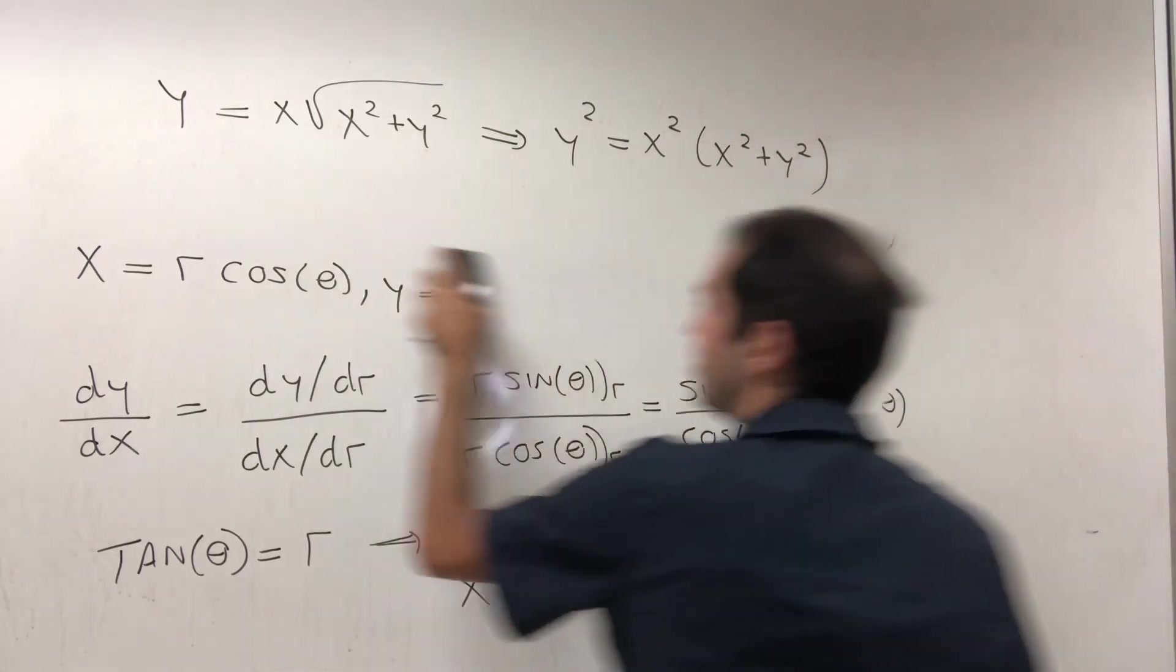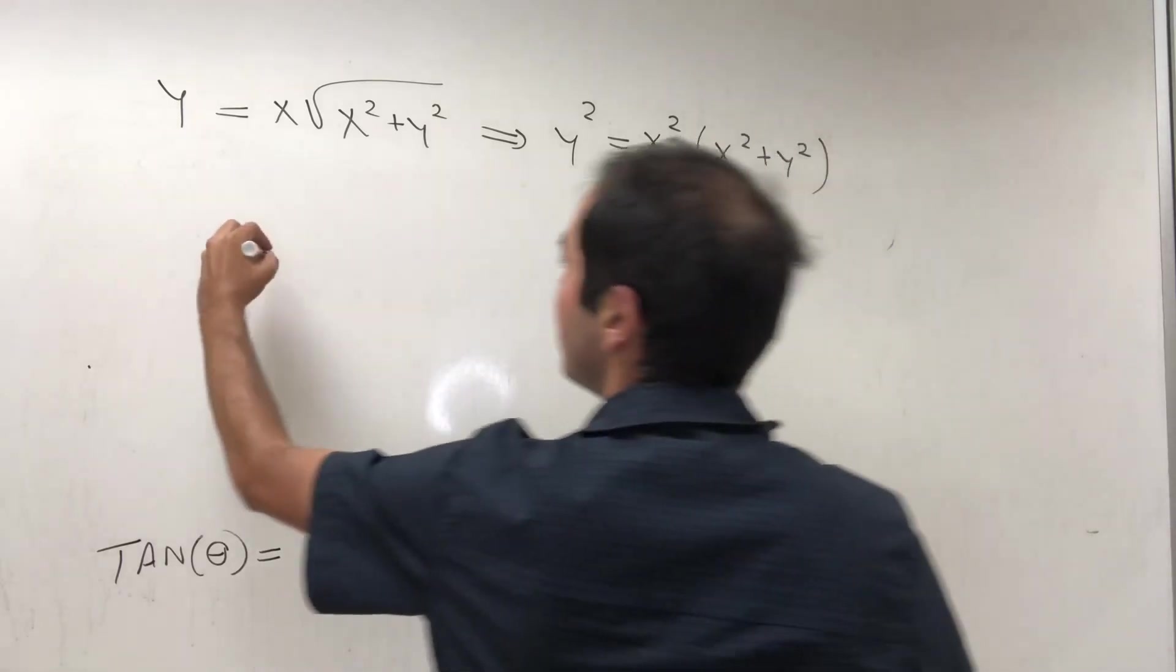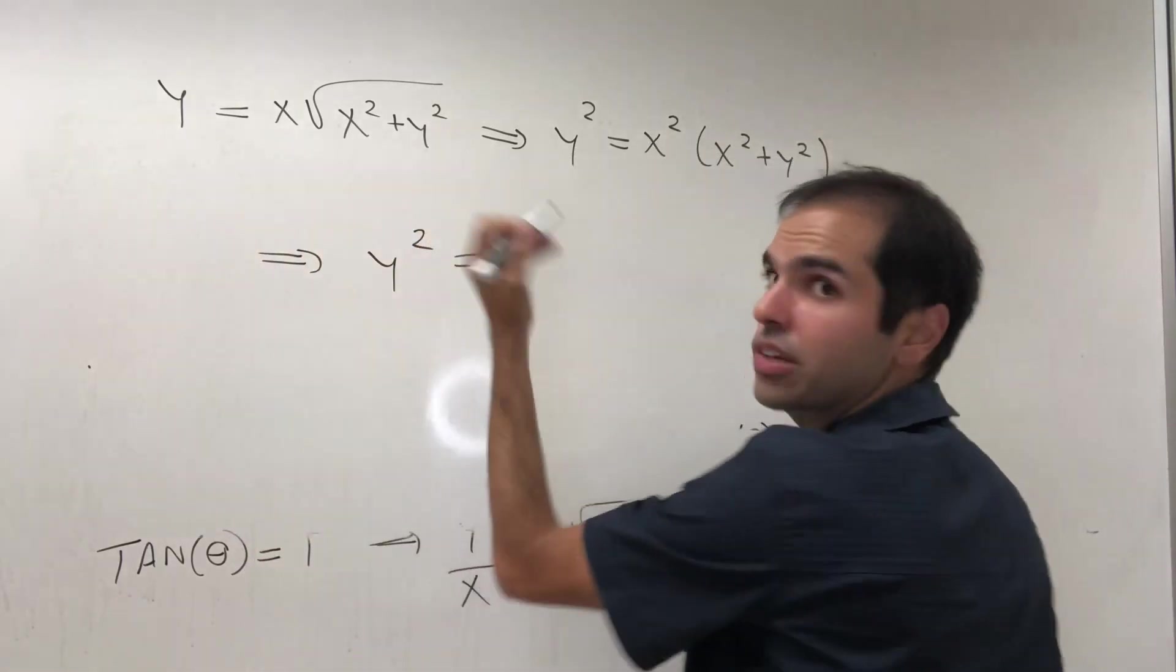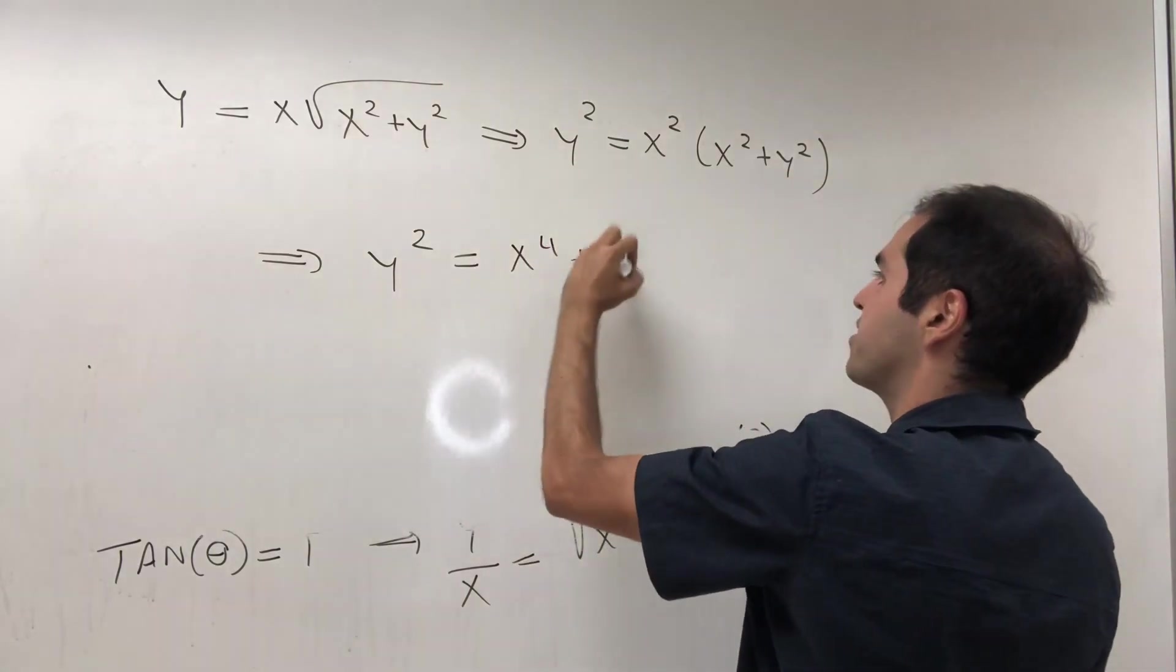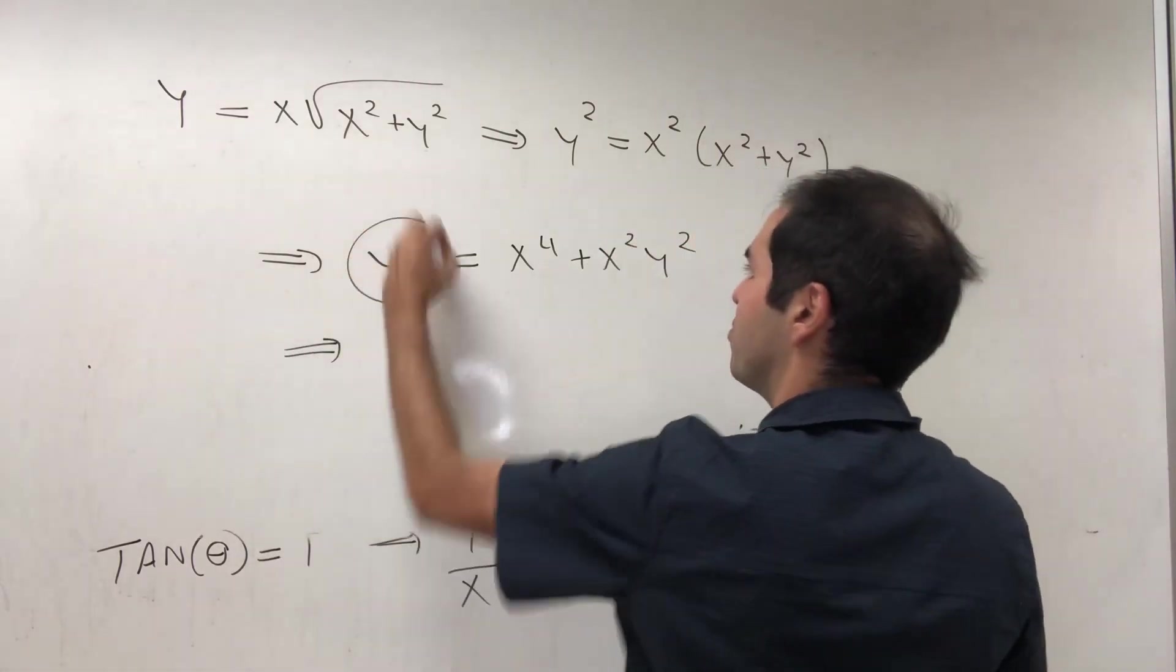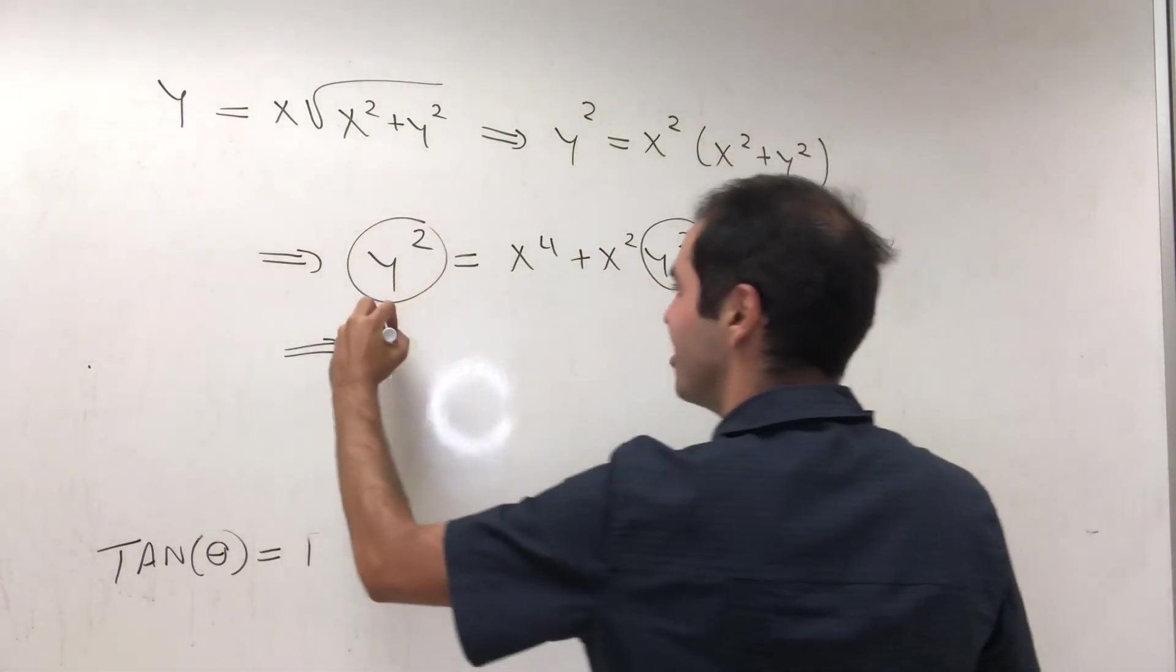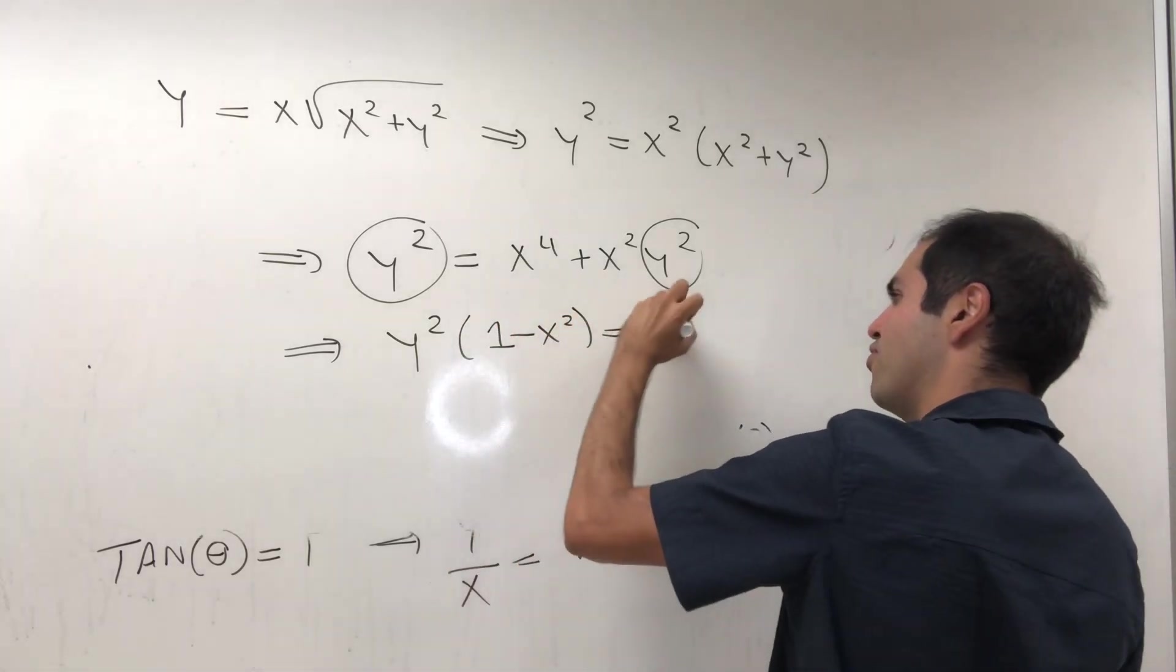Let's expand everything out. Factoring out y² here, we get y²(1 - x²) = x⁴. Almost done.